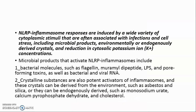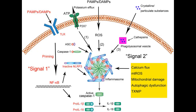NLRP inflammasome responses are induced by a wide variety of cytoplasmic stimuli often associated with infections and cell stress, including microbial products, environmentally or endogenously derived crystals, and reduction in cytosolic potassium ion (K+) concentrations. Microbial products that activate NLRP inflammasomes include bacterial molecules such as flagellin, muramyl dipeptide, LPS, and pore-forming toxins, as well as bacterial and viral RNA.